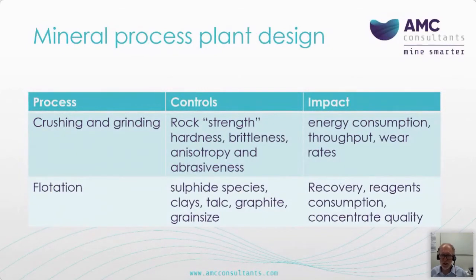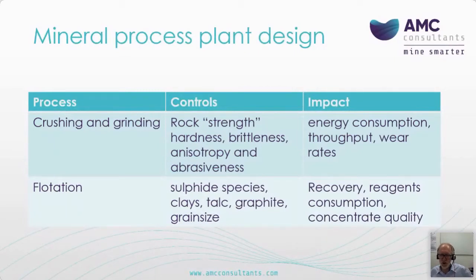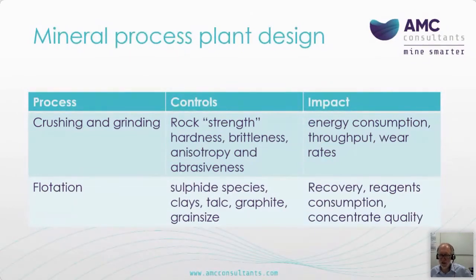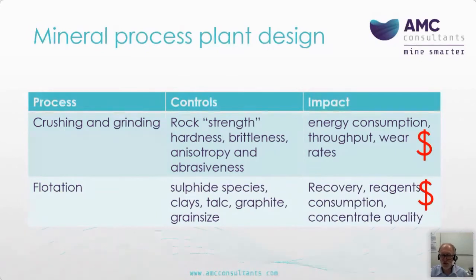In process plant design, uncertainty about ore characteristics can also lead to suboptimal design decisions, incorrect estimation of operating costs, revenues and ultimately project value. Crushing and grinding processes are controlled by rock strength — including hardness, brittleness and anisotropy — which directly affect energy consumption, throughput and wear rates. With flotation, properties such as sulphide species, the presence of clays, talc, graphite, grain size and texture will all likely impact recovery, reagent consumption and concentrate quality. These impacts affect capital costs, operating costs, revenues, or possibly all three.